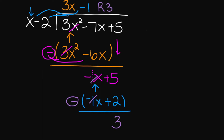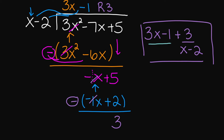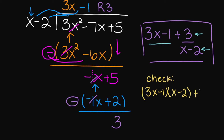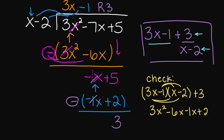The proper way to write this is 3x minus 1 plus 3 over your divisor. So 3x minus 1 is your quotient, 3 is the remainder, and that's over your divisor which is x minus 2. To check your work, multiply your quotient 3x minus 1 times your divisor plus your remainder, and it should take you back to your dividend. This gives us 3x squared, negative 6x, negative 1x, plus 2, plus 3 — which equals 3x squared minus 7x plus 5, taking us back to our dividend. So we know this is the correct answer.